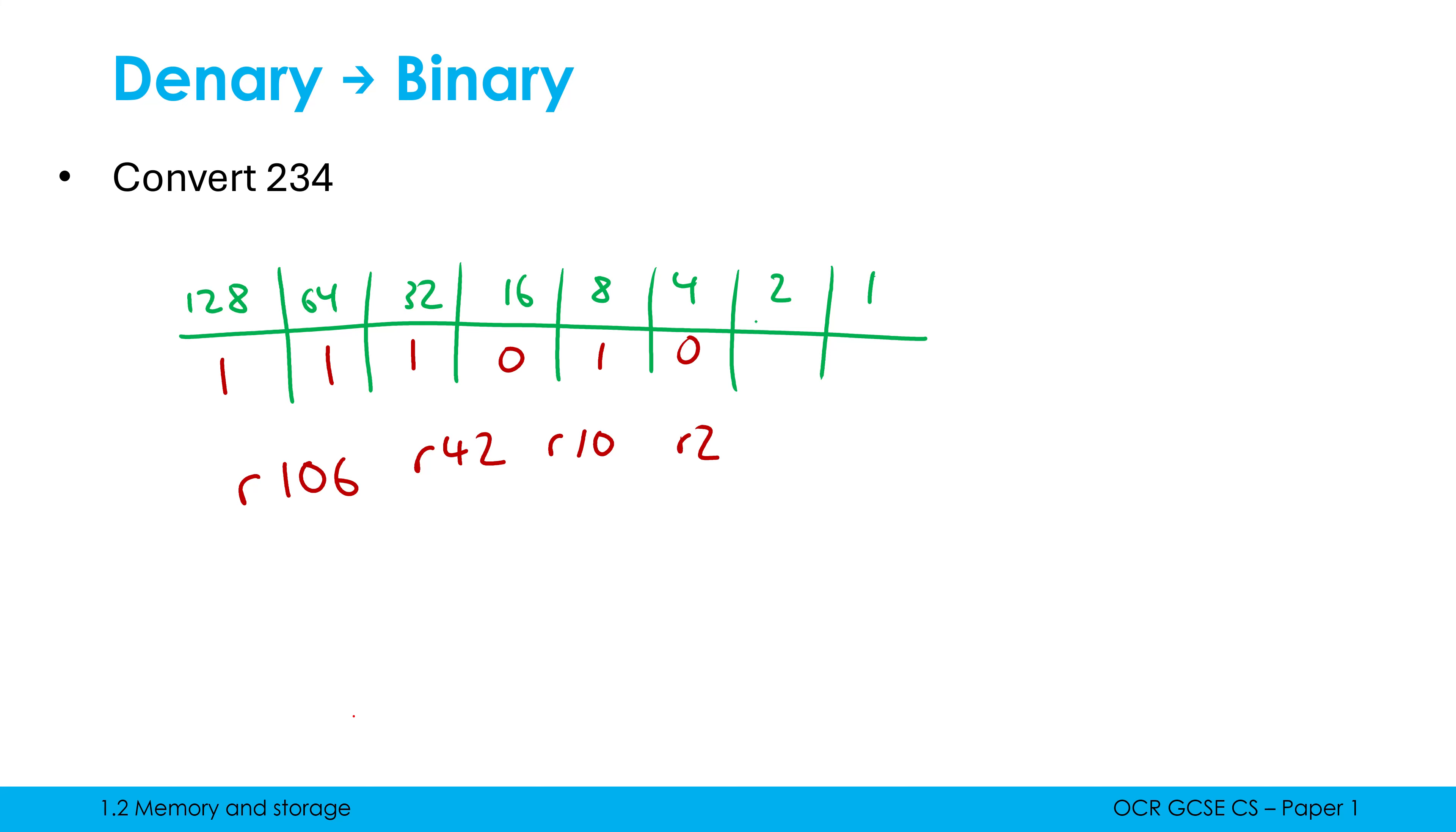4 doesn't go into 2. 2 does go into 2. Get remainder of 0. That's our goal. And we put another 0 at this final column. The answer here is 11101010, which is how 234 would be represented in a computer.